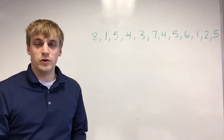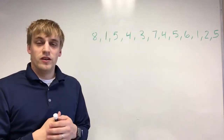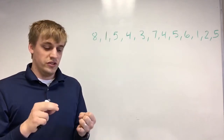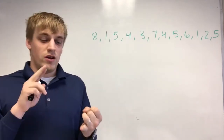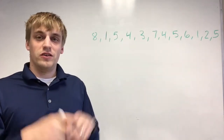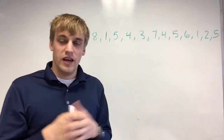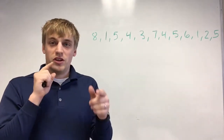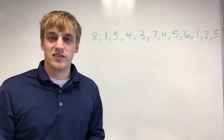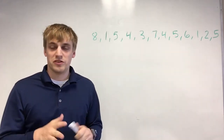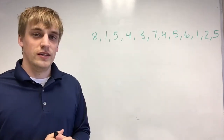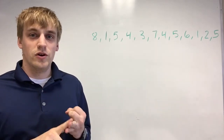We have been talking about statistics and we have learned about some of the measures of central tendency and a measure of variability. The measures of central tendency that we've talked about are mean, median, mode, and mid-range. The measure of variability that we talked about — how spread out the data is — is something called the range. We're going to go through another example that will answer some questions about special situations with certain measures, specifically median and mode.